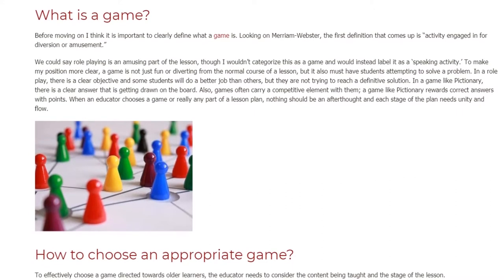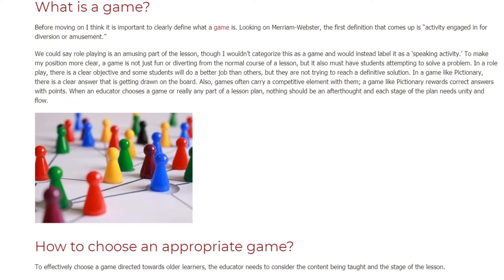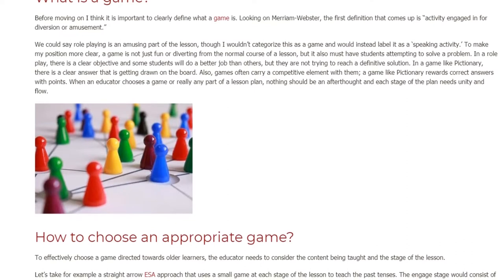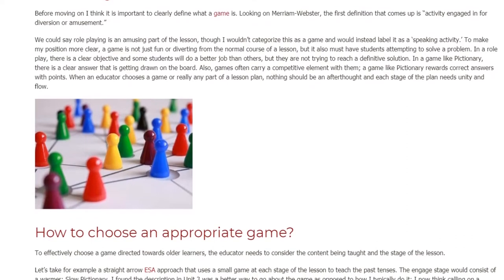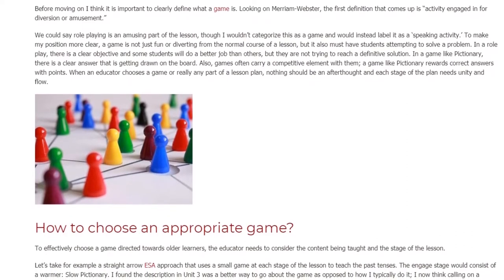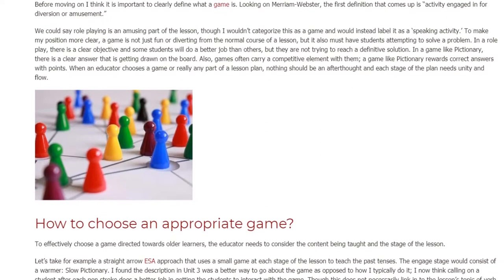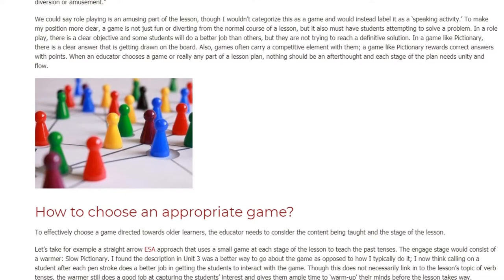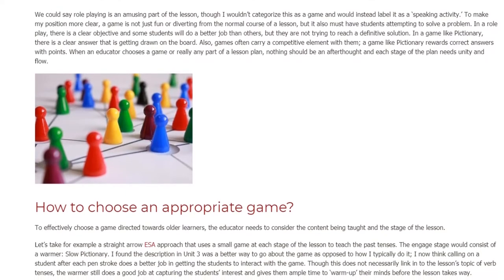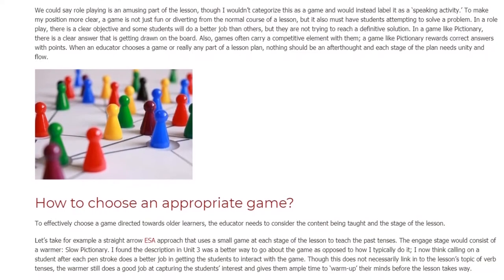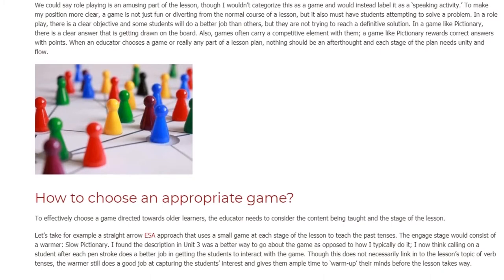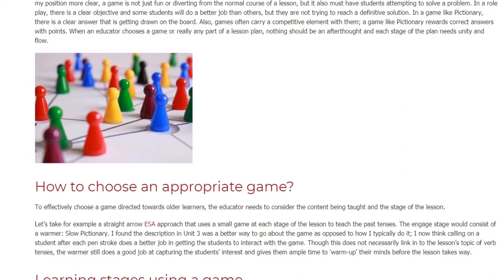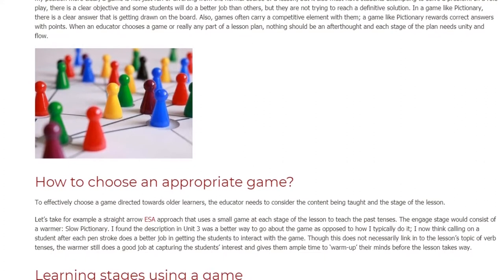How to choose an appropriate game? To effectively choose a game directed towards older learners, the educator needs to consider the content being taught in the stage of the lesson. Let's take for example a straight arrow ESA approach that uses a small game at each stage of the lesson to teach the past tenses. The engaged stage would consist of a warmer — slow Pictionary. I found the description in Unit 3 was a better way to go about the game as opposed to how I typically do it.